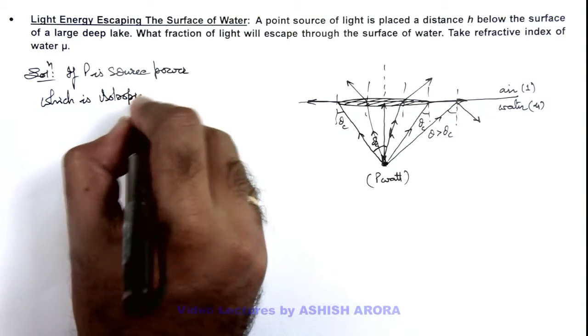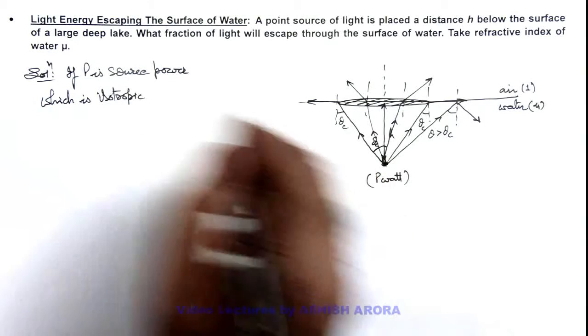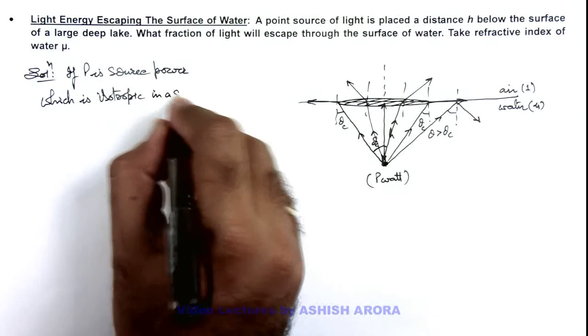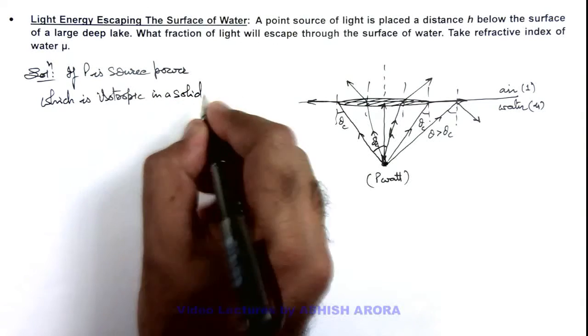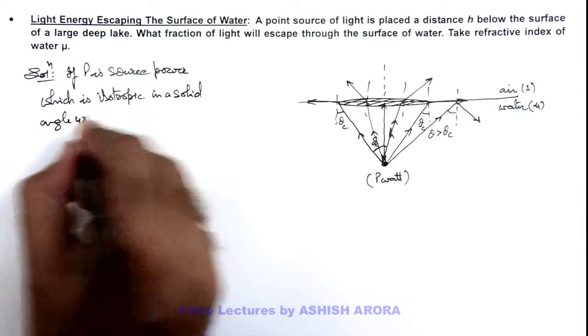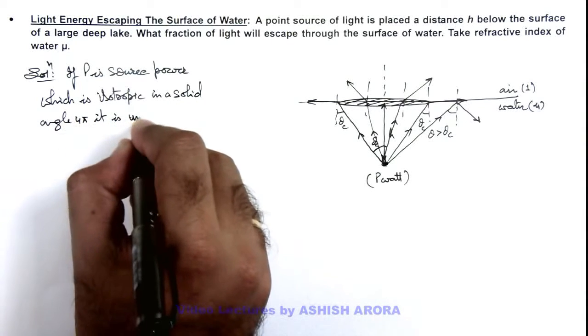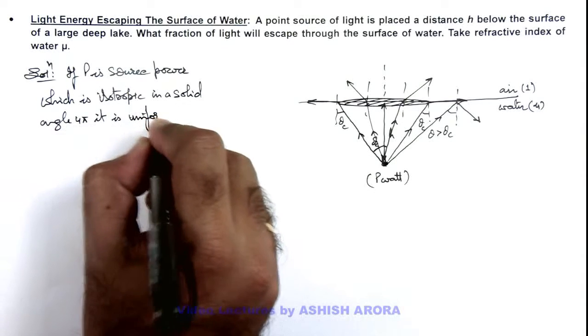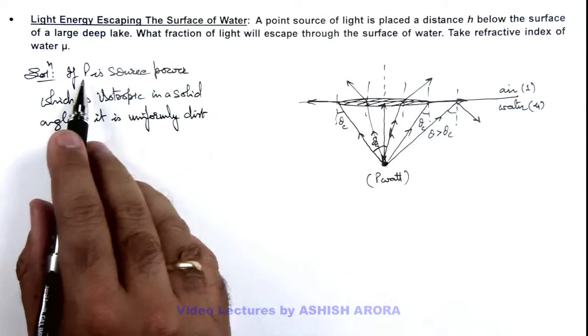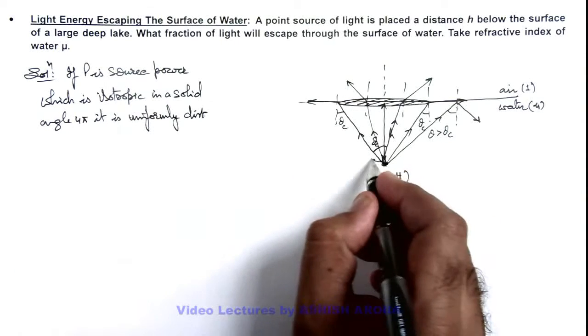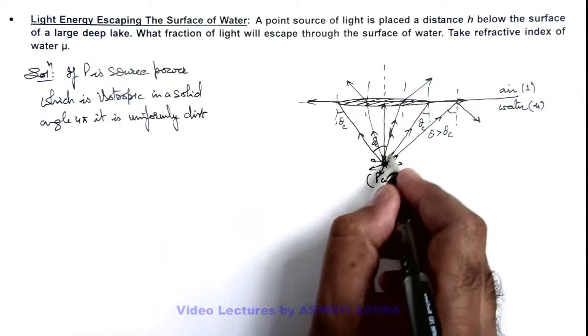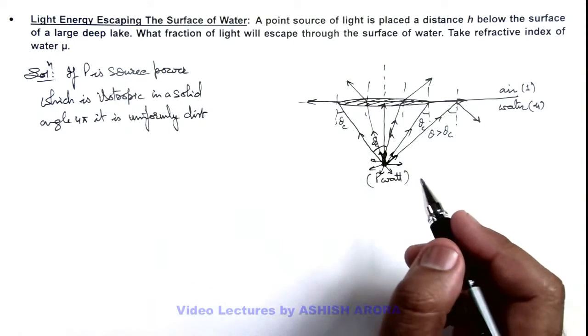as it is emitting its light energy uniformly in all directions, then we can say in a solid angle 4π it is uniformly distributed. So if this power P is uniformly distributed in a solid angle 4π, that is the whole 3-dimensional surrounding space with this source at center of this structure, then we can directly write